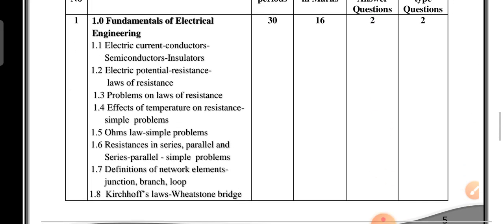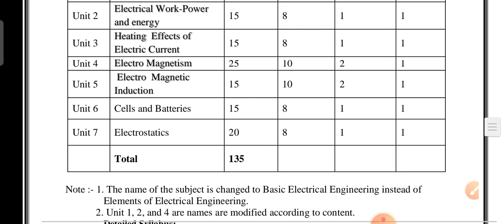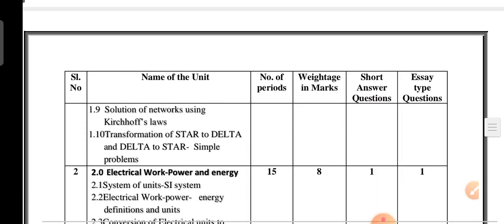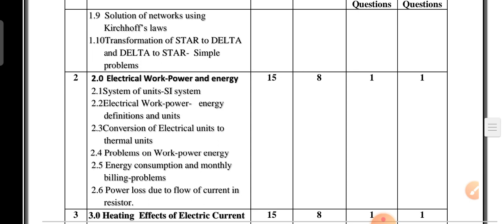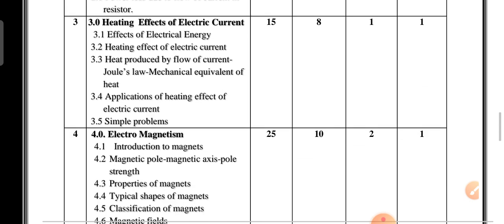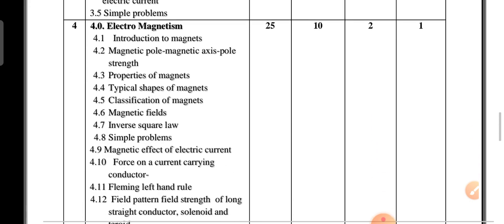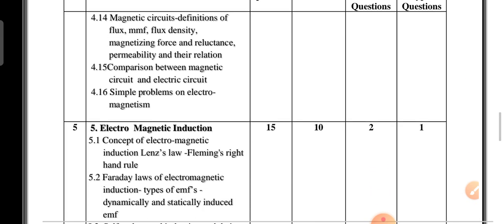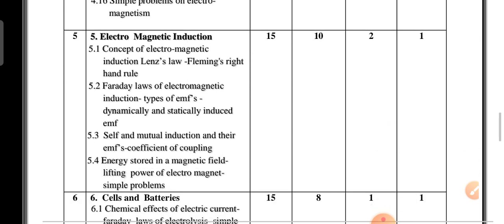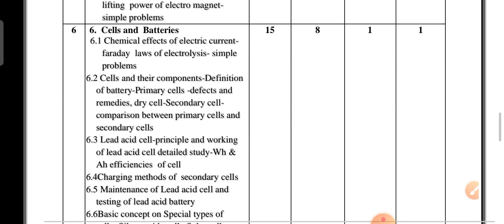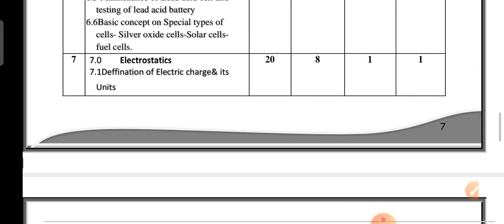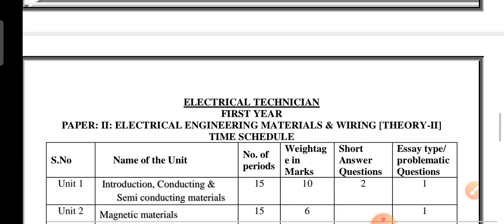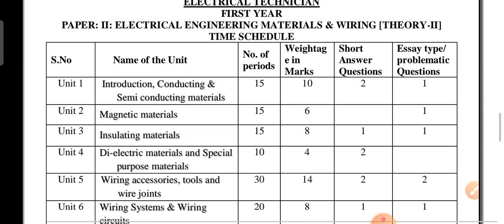So in the detailed syllabus, there are seven units: Unit 1 syllabus, Unit 2 syllabus, Unit 3 syllabus, Unit 4 syllabus, Unit 5 syllabus, Unit 6 syllabus, and Unit 7 syllabus. I have finished the first unit self-assessment paper for the students, and next is the second unit.